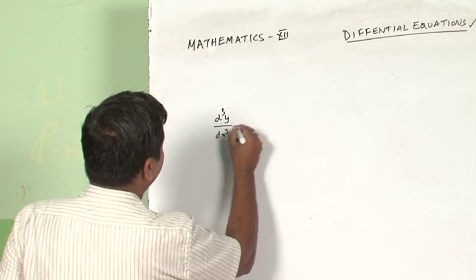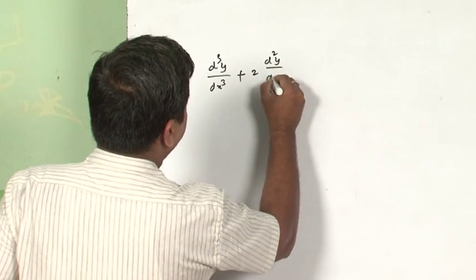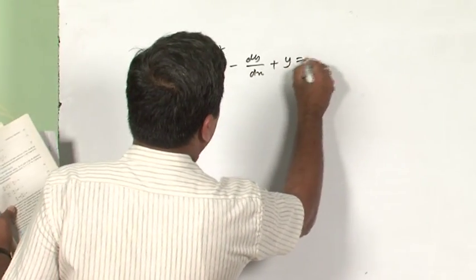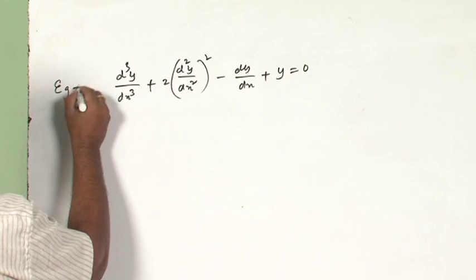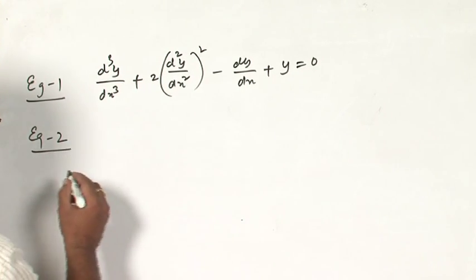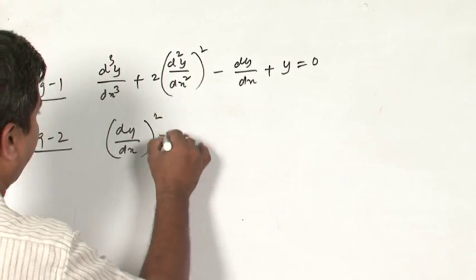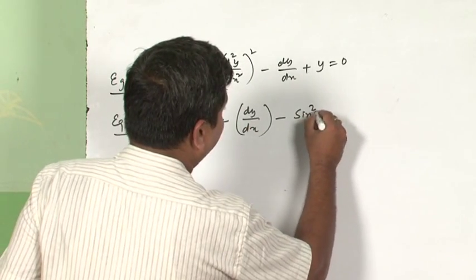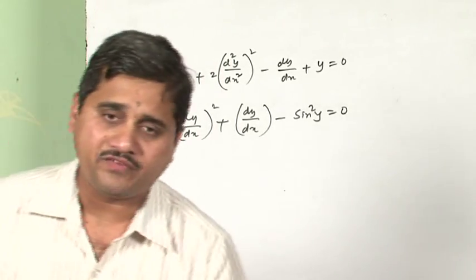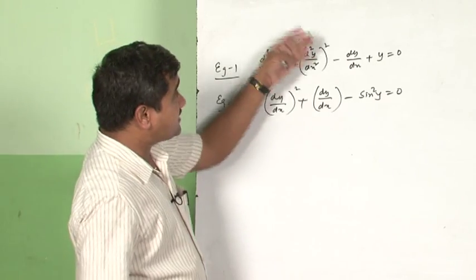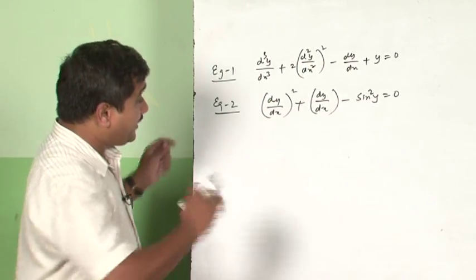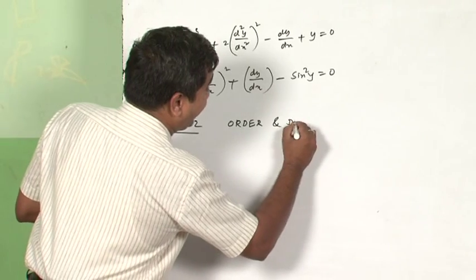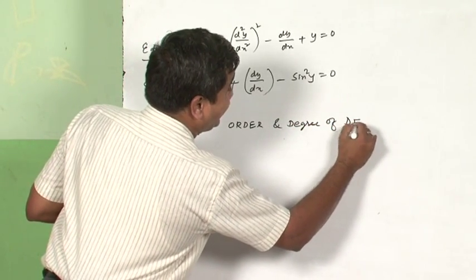Here are a few examples of differential equations from your textbook. Example one: d³y/dx³ + 2(d²y/dx²)² − dy/dx + y = 0. These are given in your textbook. Now, after understanding how differential equations are formed, the next topic — topic number two — is the order and degree of a differential equation (DE). You need to know these two because for any equation in mathematics, these two components are mandatory to understand.